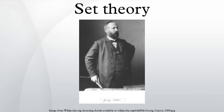The utility of set theory led to a contributed article in 1898 by Arthur Schoenflies in Klein's Encyclopedia. The next wave of excitement in set theory came around 1900, when it was discovered that Cantorian set theory gave rise to several contradictions, called antinomies or paradoxes. Bertrand Russell and Ernst Zermelo independently found the simplest and best-known paradox, now called Russell's paradox.